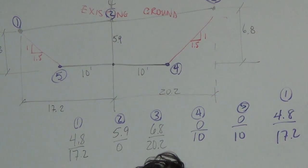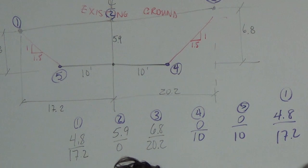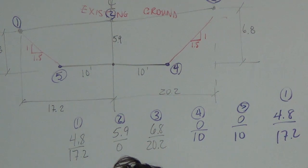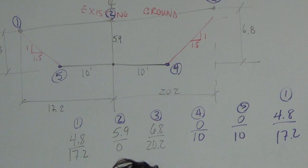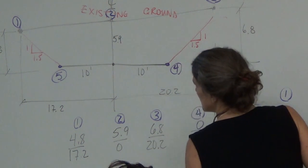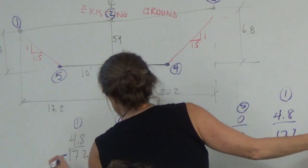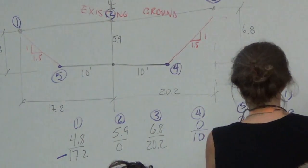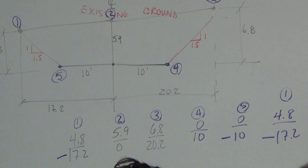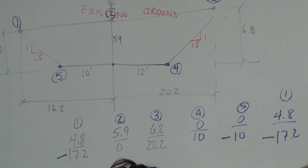Nathan, am I done? No. So what needs a negative? Do any of the Y's need a negative? No, because they're all above the road, so they're all going to be positive. Do any X's need a negative? Yes — points 1 and 5, because they are to the left of the origin.